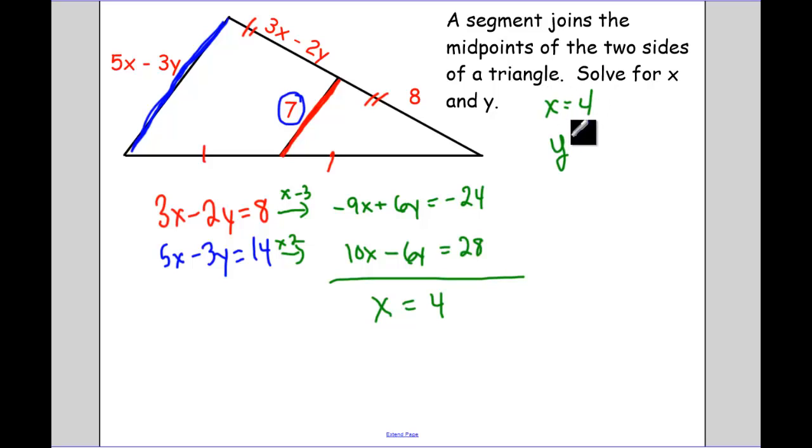Now I need to get Y. Plug back into one of these two equations that we had. I'm going to plug into the top one just because the numbers are a little bit smaller. So I have 3 times 4 minus 2Y equals 8. So I have 12 minus 2Y equals 8. Negative 2Y is equal to, I subtract 12 over, that's a negative 4. Y is going to be equal to 2.